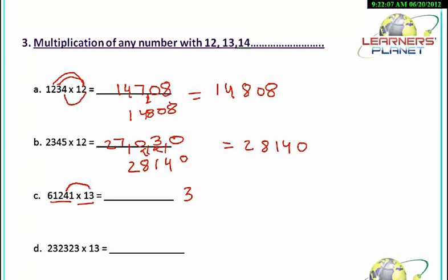Then 4 times 3 is 12 plus 1, 13. We write 3 over here, 1 over here. Then 2 times 3 is 6 plus 4, 10. Then 1 times 3 is 3 plus 2, 5. Then 6 times 3 is 18 plus 1, 19. Then 6 as it is.